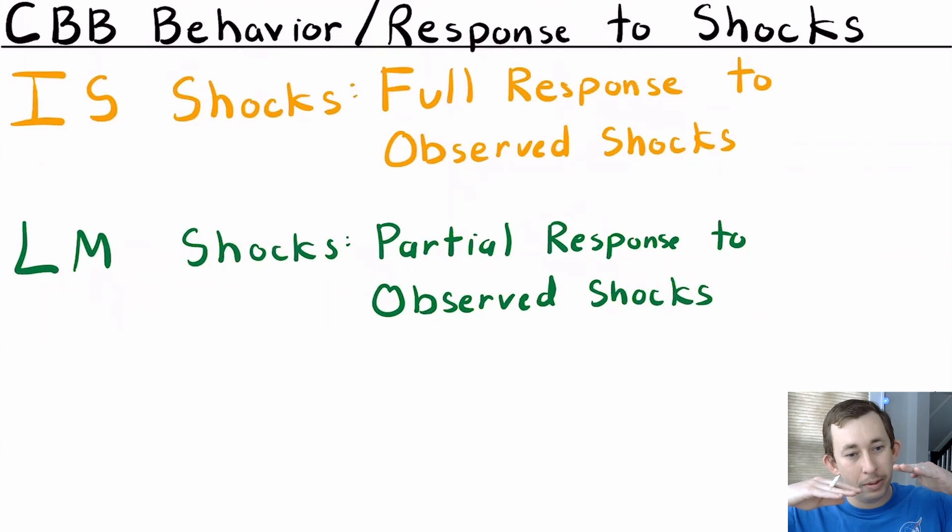They should partially respond to observed LM shocks, or shocks to inflation. The reason is there's sort of a trade-off between inflation and output. So if I respond to inflation, I am going to have to put the economy into a bit of a recession. So I don't want to fully correct for inflation because that's going to give me output pain. But I can fully correct for output pain, or output shocks, which are IS shocks.